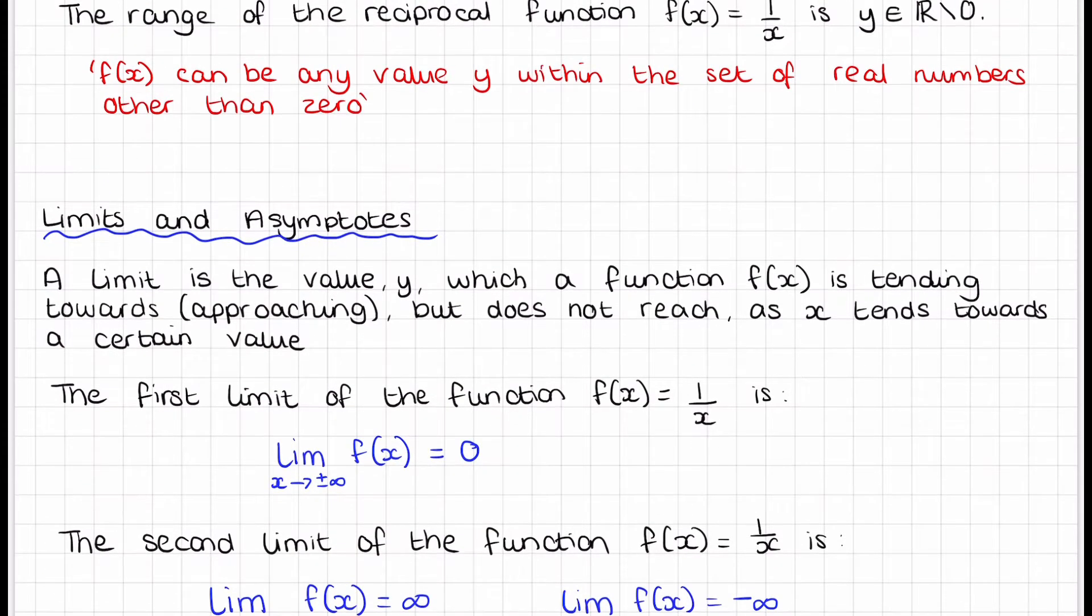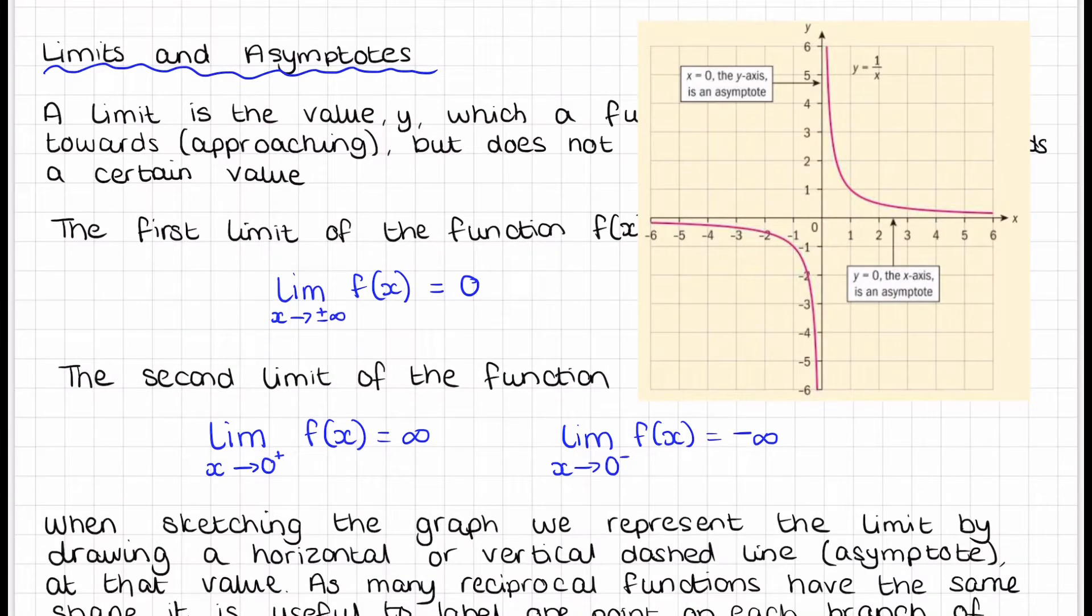Limits and asymptotes. A limit is the value y which a function f(x) is trending towards, approaching, but does not reach as x tends towards a certain value. This links to asymptotes because in this situation, as x is approaching a certain value, so the limit as x is approaching plus or negative infinity.